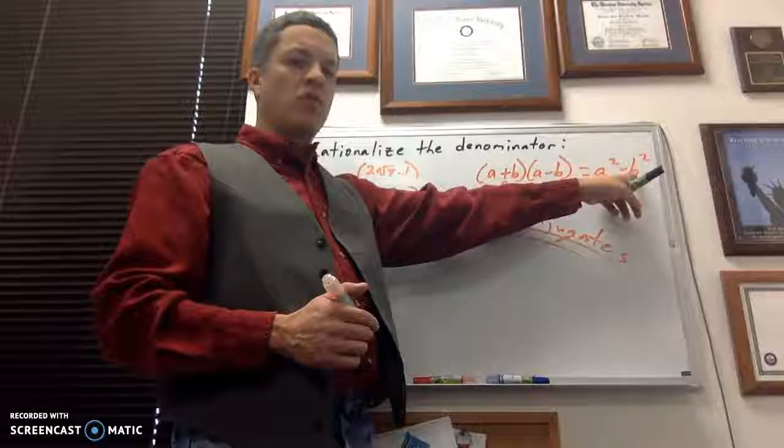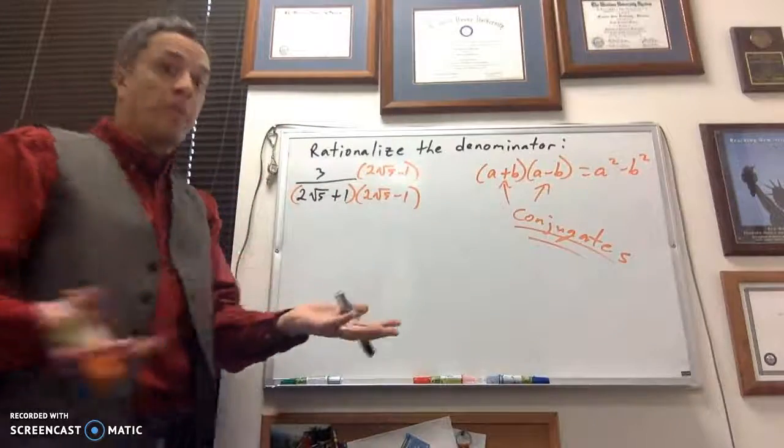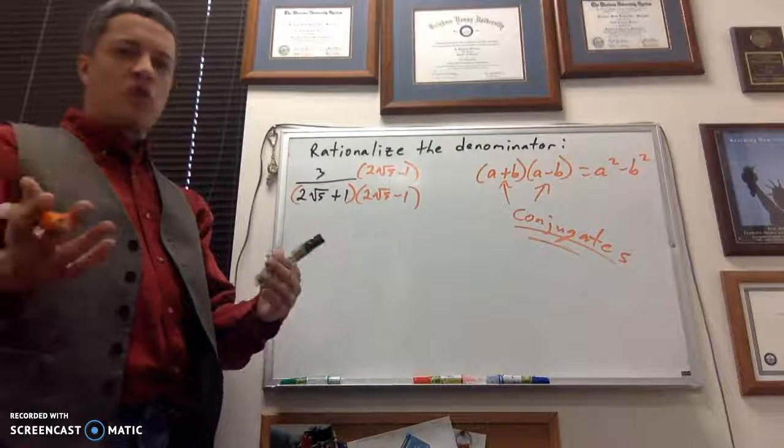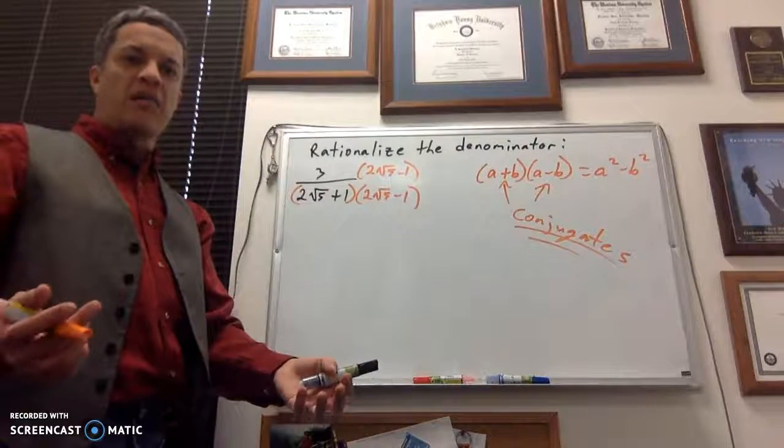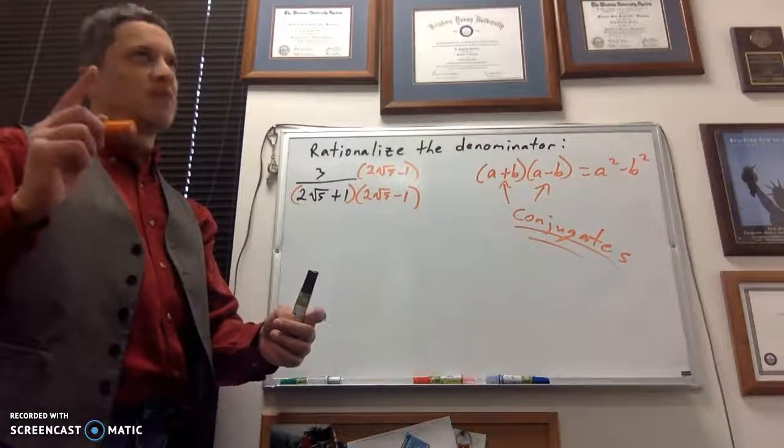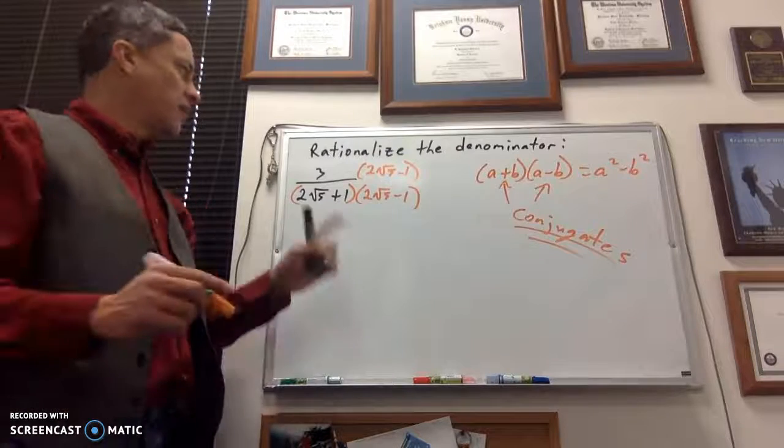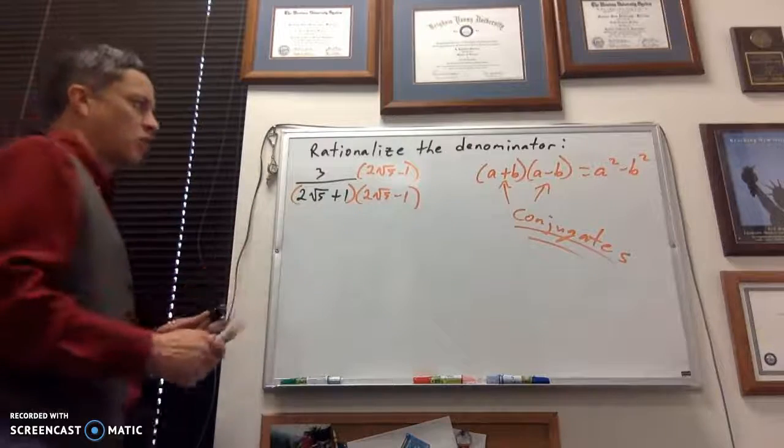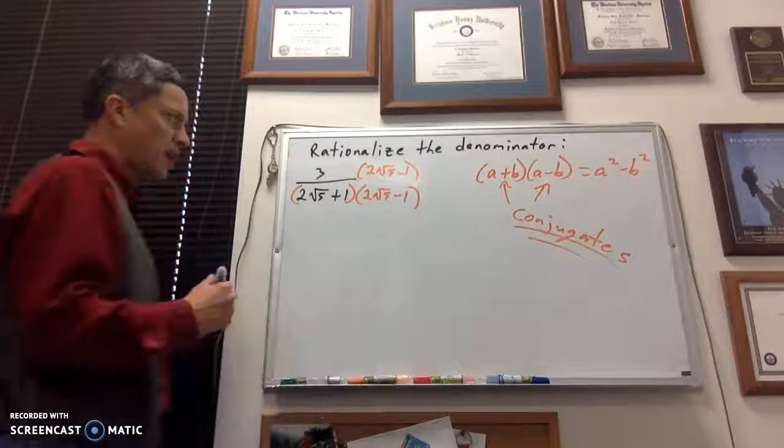I've got a squared minus b squared. So if either a or b or both are radicals, once you square them, you're going to lose the radical, right? When I say radical, I mean square root, right? If we talk about a cubed root here, I'm not even going to go there, okay? We're talking square roots here.